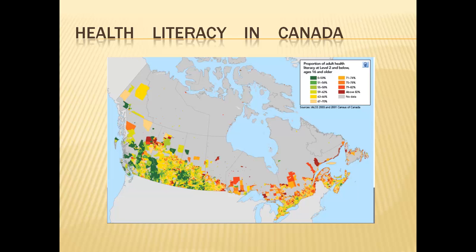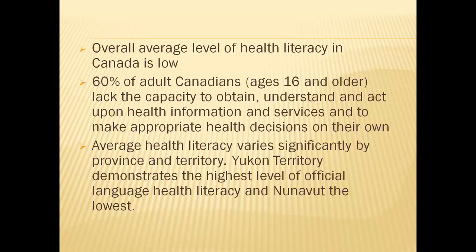This map shows the proportion of adult Canadians who are at a Level 2 or lower health literacy level. Level 2 is defined as a capacity to deal only with simple, clear material involving uncomplicated tasks. People at this level may develop everyday coping skills, but their poor literacy makes it hard to conquer challenges such as learning new job skills. Overall, the average level of health literacy in Canada is low — 60% of adult Canadians lack the capacity to obtain, understand, and act upon health information and services to make appropriate health decisions on their own.